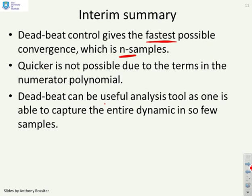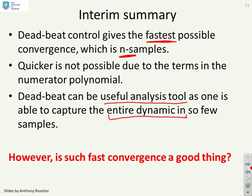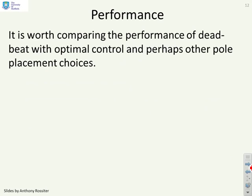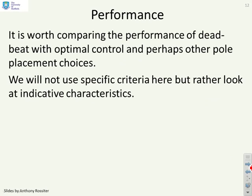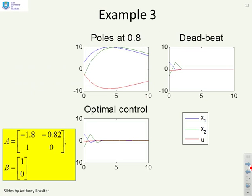Deadbeat can be a useful analysis tool as it enables you to capture the entire dynamic in just n samples. However, here's the key point: is such fast convergence a good thing? We'll compare the performance of deadbeat with optimal control and an arbitrary pole placement. We're not going to use any specific criteria but we're just going to look at the sort of behaviours that result and see if they give us any insights.